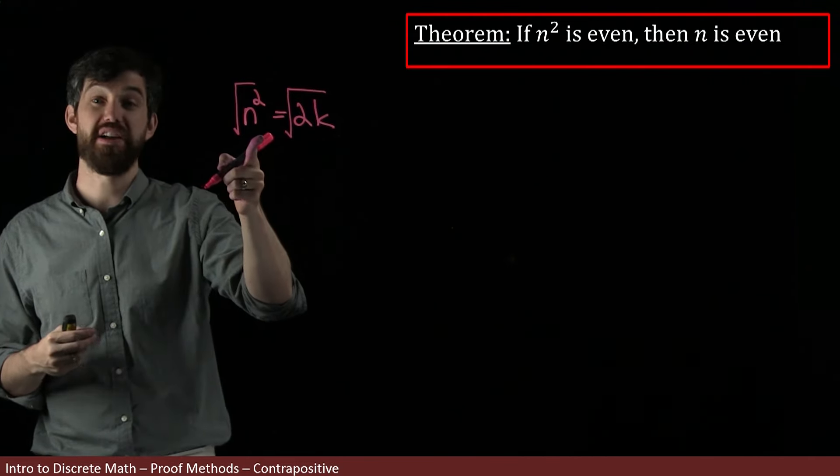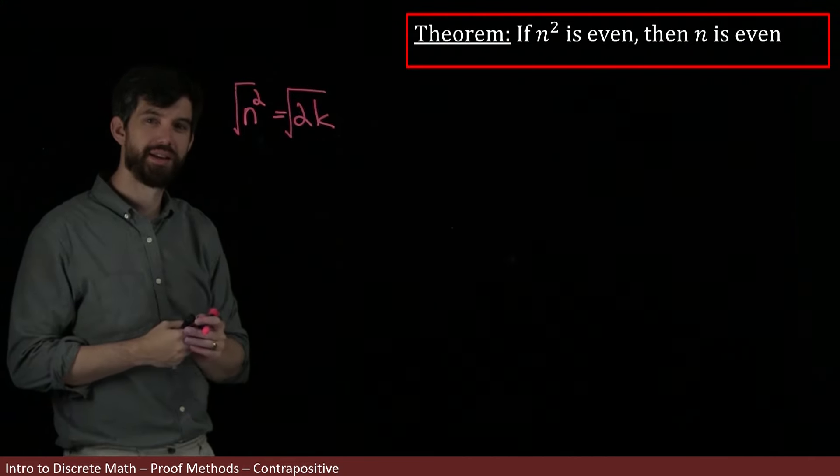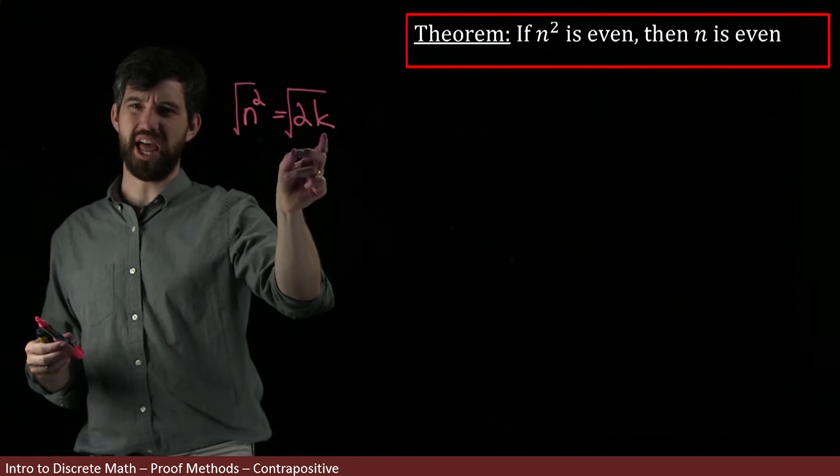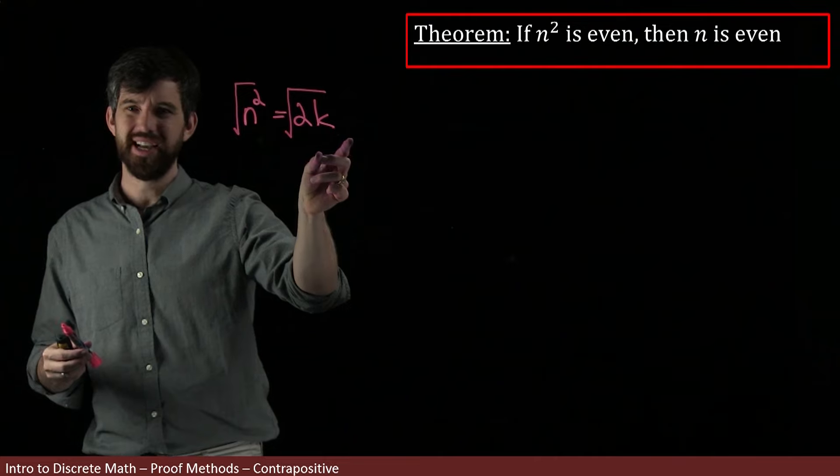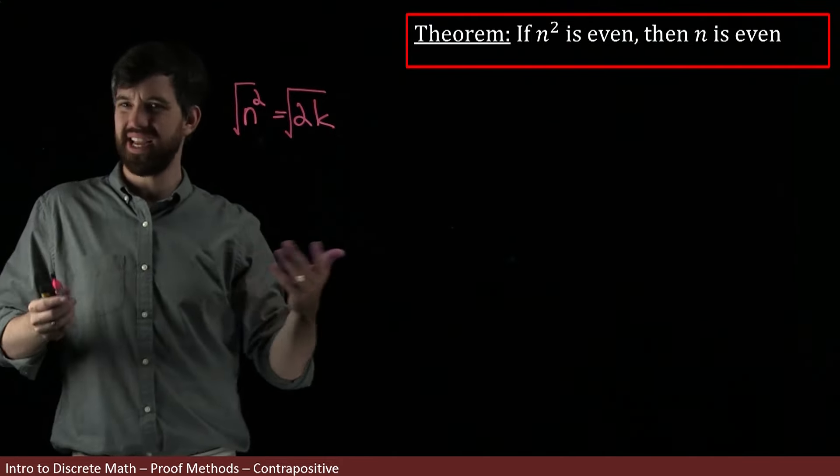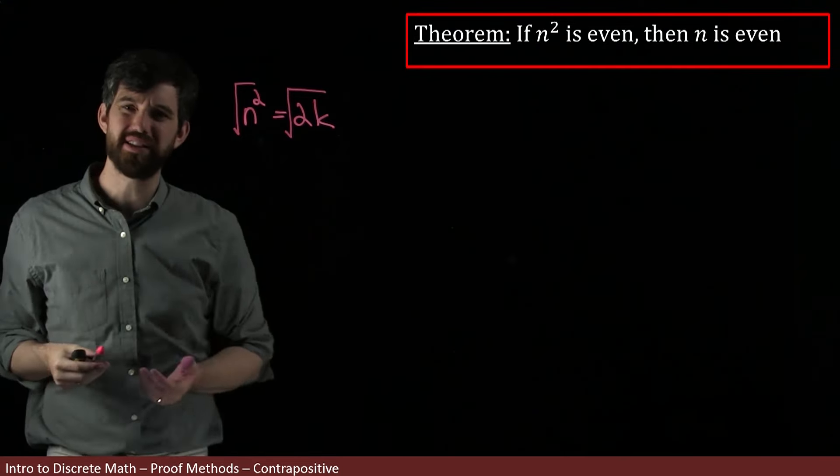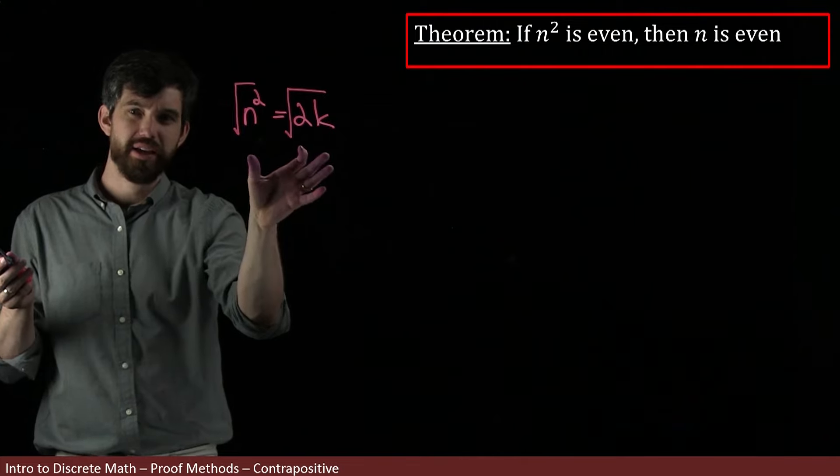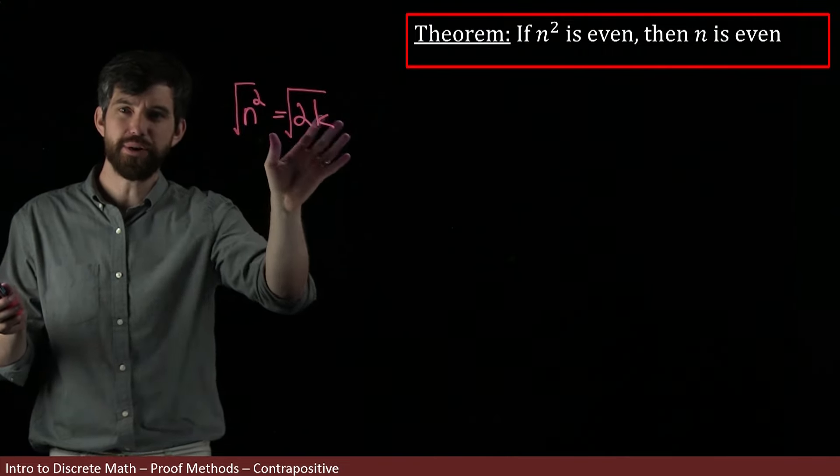So maybe I should take the square root of both sides. That might give me n if I took the positive square root. But then what I have is equal to √2 times √k, which doesn't look anything like being even. So assuming n² was even and taking square roots just didn't lead anywhere - it's got all this messy √2 stuff floating around. Proving it directly seems challenging.